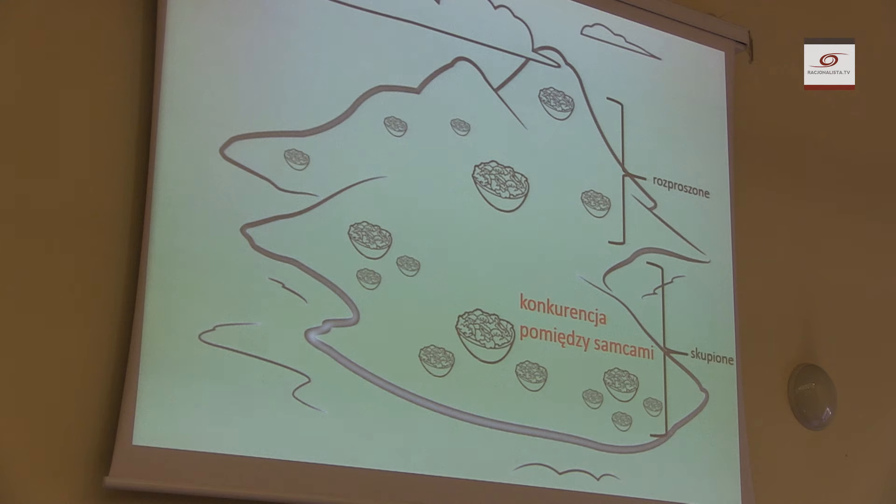Jeżeli mamy pokarm skupiony, możemy być pewni, że zaobserwujemy konkurencję pomiędzy samcami. Kiedy mamy skupione źródło pokarmu, osobniki mogą się grupować i jeść w danym miejscu. Natomiast samce, dzięki mutacjom, mogą zyskiwać cechy pozwalające im monopolizować dane źródło pokarmu. Możemy sobie wyobrazić, że taką cechą będzie na przykład karabin maszynowy – kiedy inne samce bez takich cech będą podchodzić i korzystać z zasobów, będą odstraszane i będą uciekały.